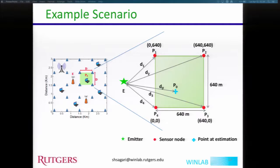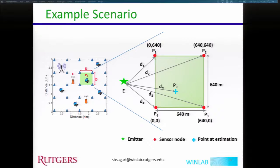In this study we considered one particular topology with a 4-by-4 sensor grid forming a square geometry. The side length of the square is 640, but we will show that this value does not matter. The emitter E is located outside of the square and P0 can be located anywhere inside or on the square.